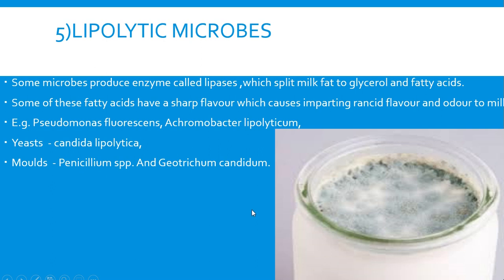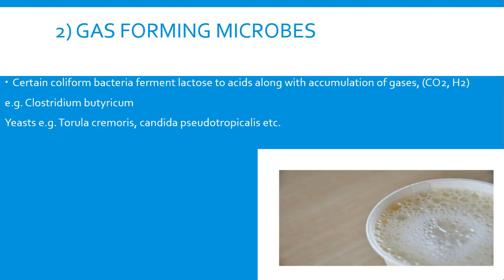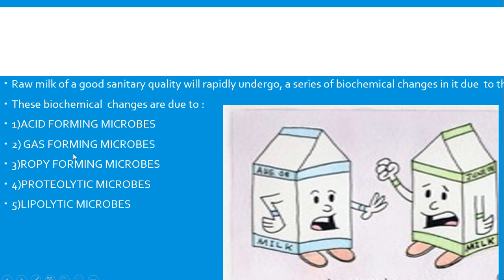We have seen the major five types of biochemical changes due to different types of microbes: acid-forming microbes, gas-forming microbes, ropy-forming microbes, proteolytic microbes, and lipolytic microbes. There is also a cartoon here showing two milk packets, one saying 'you seem to be sour now' and the other responding 'you are not fit for consuming.' This is just a cartoon illustration of soured milk.